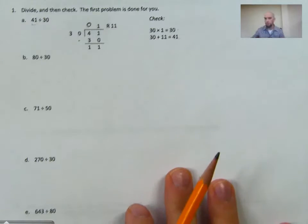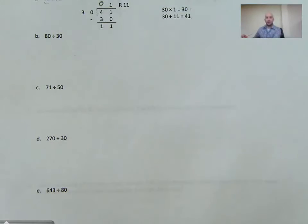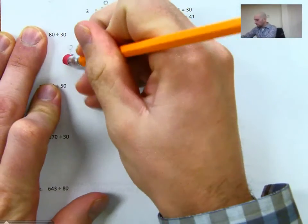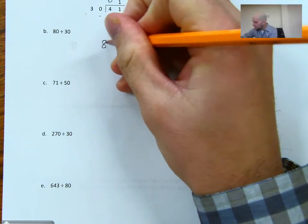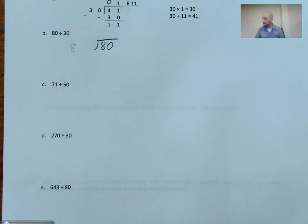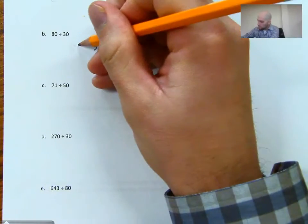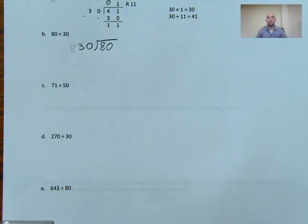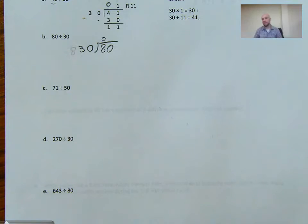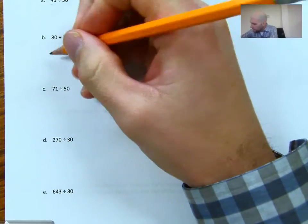If we look at letter B, we have 80 divided by 30. Again, remember, 80 needs to go inside of that box or inside of that house. And outside of it is going to be that second number, your divisor, which in this case is 30. So 30 goes into 8 zero times. I'm going to put a 0 right here. 30 goes into 80. If I'm unsure how many times 30 goes into 80, what I can do is I can make a factor tree.